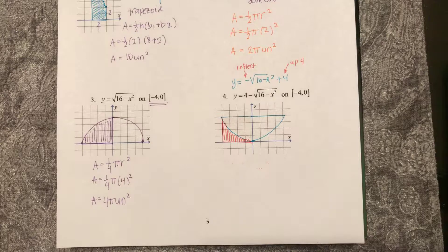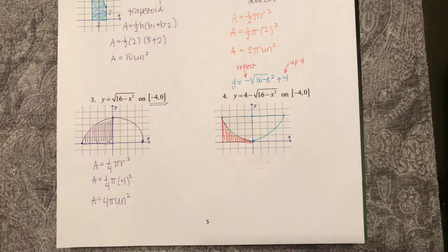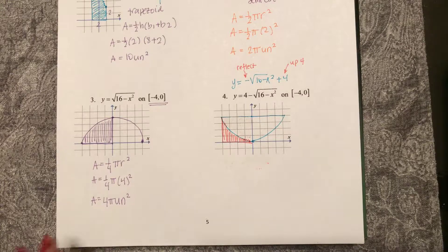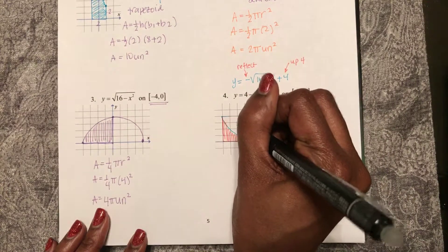So how can I find that area using geometry? So first, I know that this area is the same as this area. It's 4 pi.